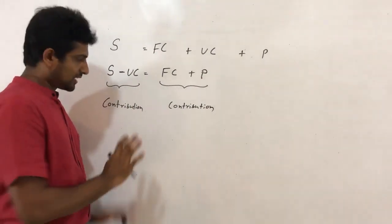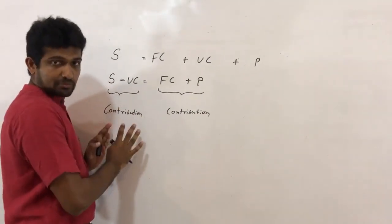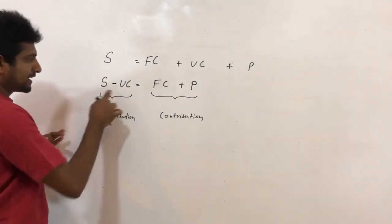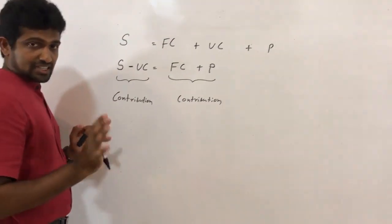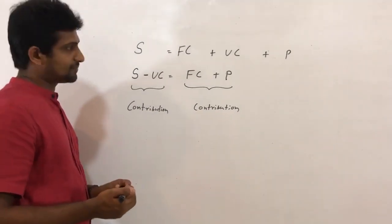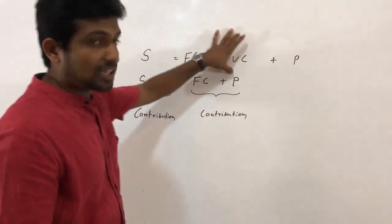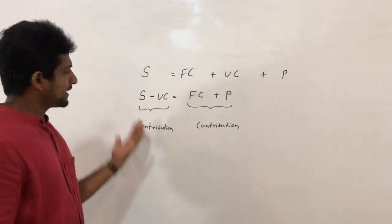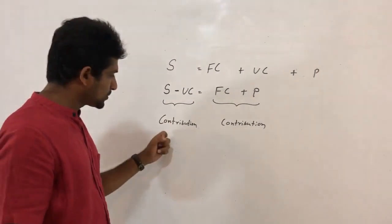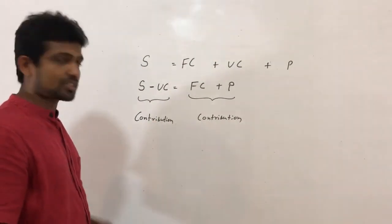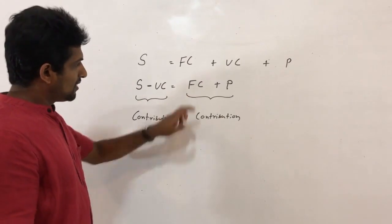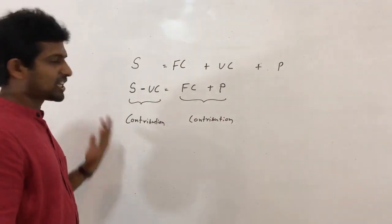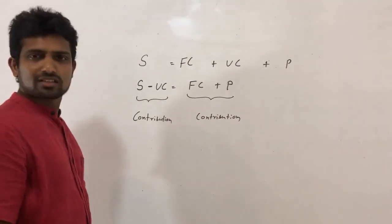Contribution is the name we use for sales minus variable cost. The other side — fixed cost plus profit — also equals contribution. So there are two ways to calculate contribution: sales minus variable cost, or fixed cost plus profit.